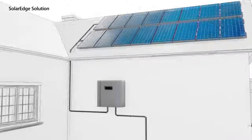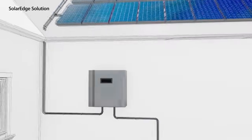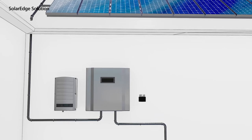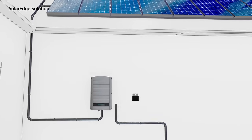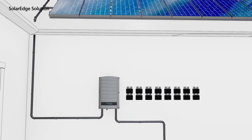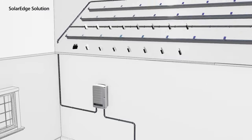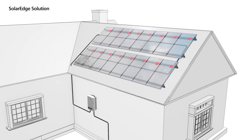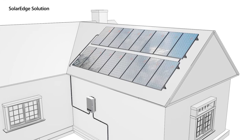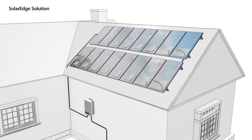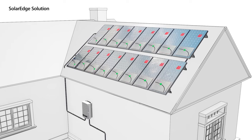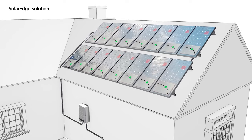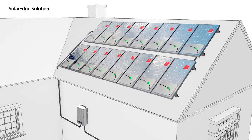Our solution splits the traditional inverter functionality into two products: the power optimizer and a simplified inverter. The power optimizers are located on each panel, turning the panels into intelligent panels. These power optimizers provide panel-level tracking and real-time adjustments of current and voltage to the optimal working point of each individual panel.